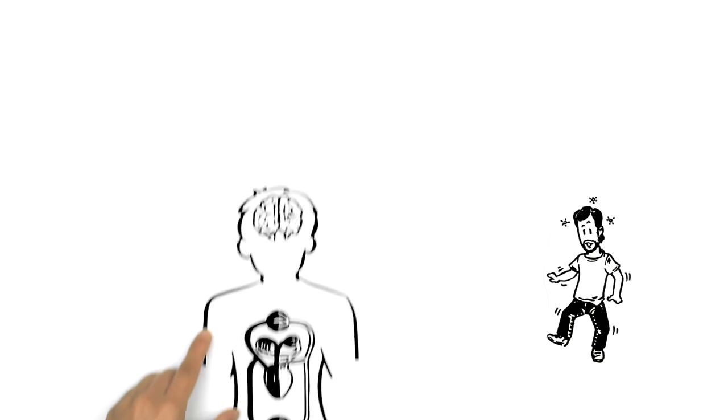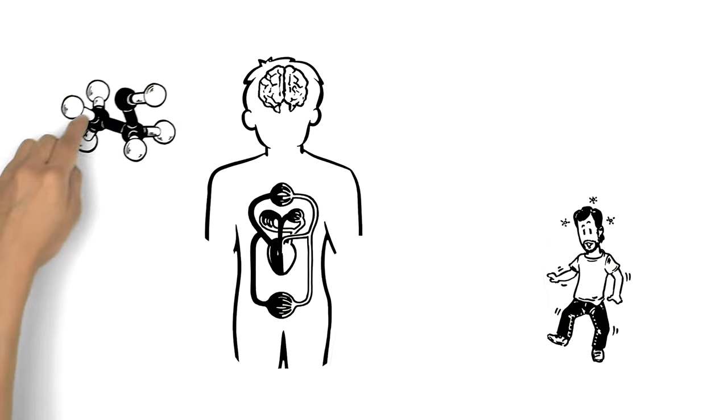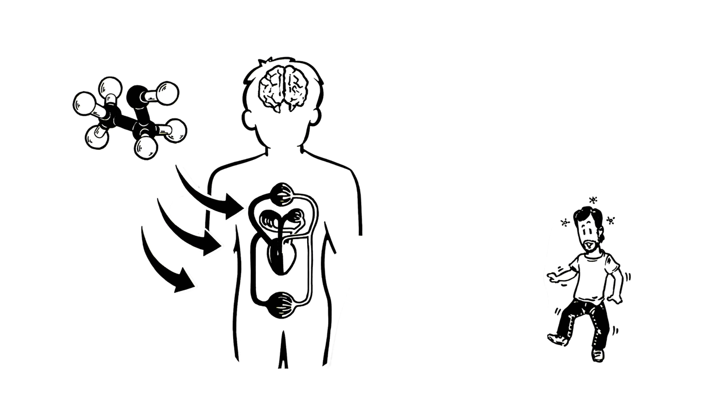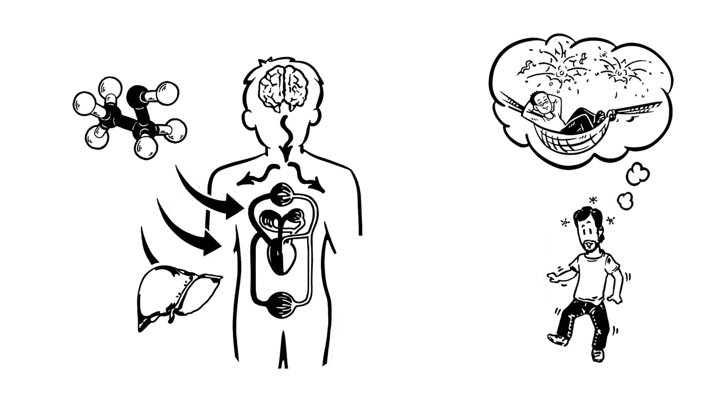The intoxicating effects of alcohol are caused by ethanol entering the bloodstream faster than the liver can break it down, thus changing the signals sent from the brain to other parts of the body. This causes the euphoric and relaxed experience of being drunk, but it also has its risks.